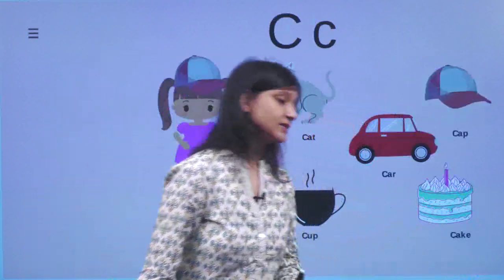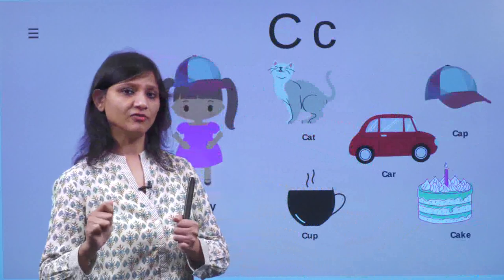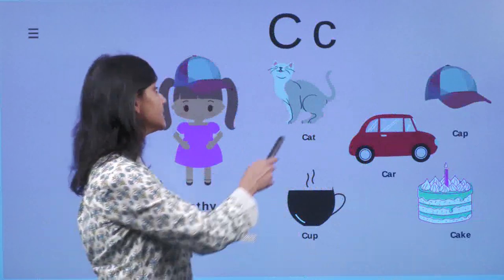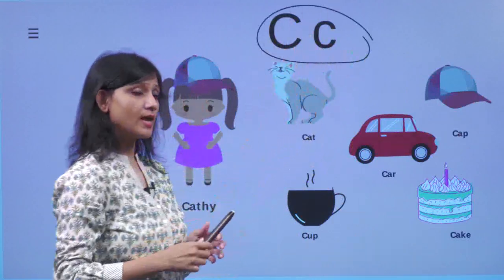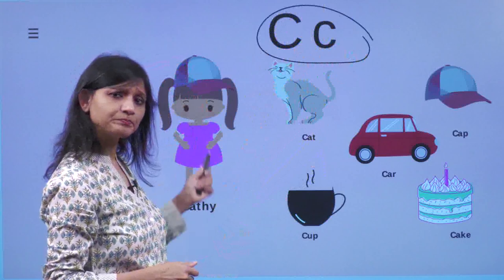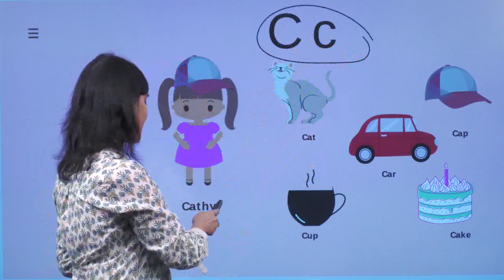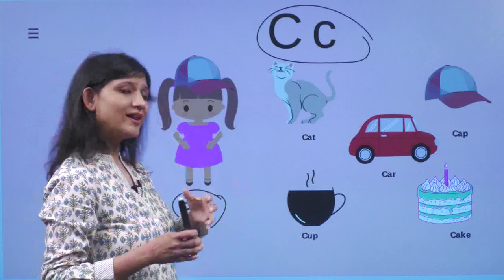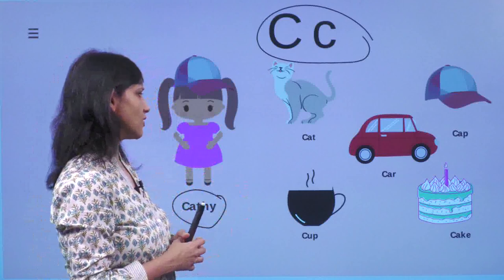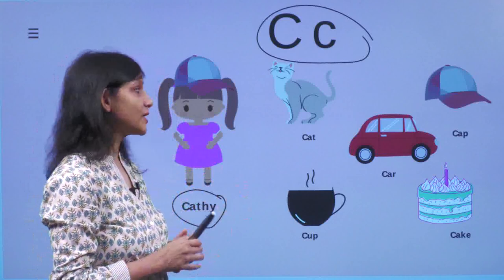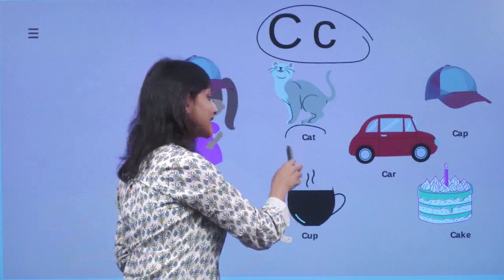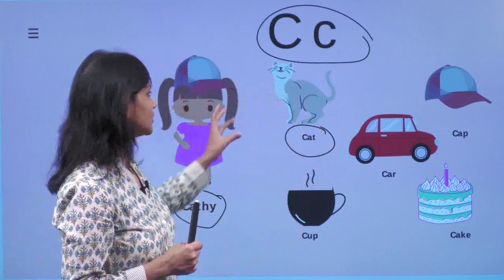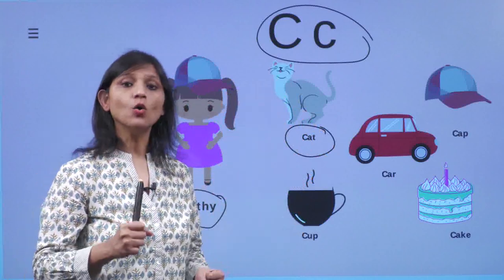Now let's move on and see the third alphabet. And who is this friend of ours? This friend of ours is C. And can you see this little girl here? Her name is Cathy. One fine day, Cathy thought of taking her dear pet, cat out on a walk. So Cathy took her cat out on a walk.